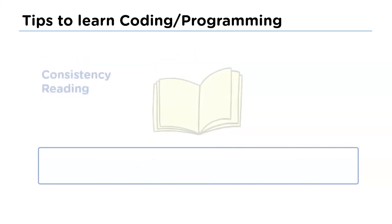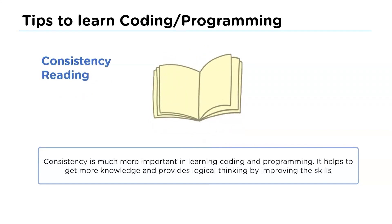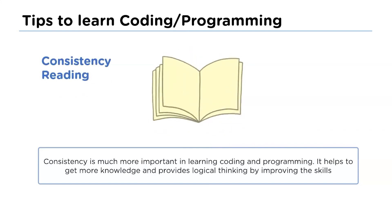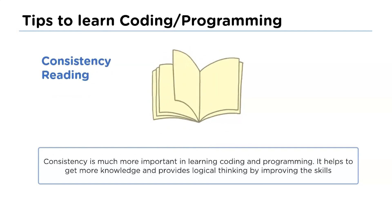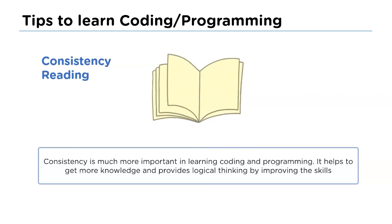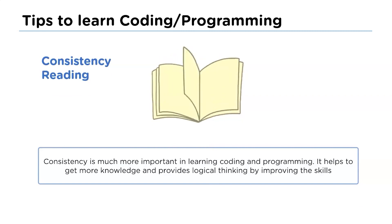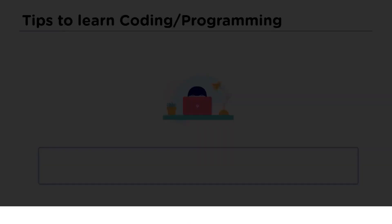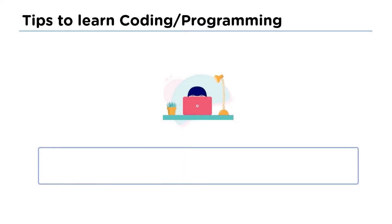The next tip is consistency in reading. The main problem in learning is consistency. Working only in free time doesn't help much because of how our brain functions. Working daily helps to gain and boost your knowledge, helps you think logically, and improves your skills. So you have to work every day to learn coding or programming.